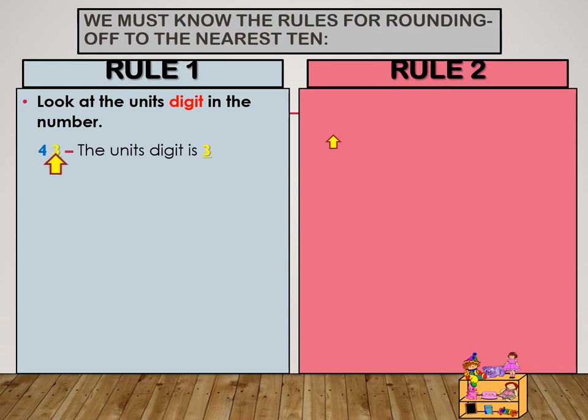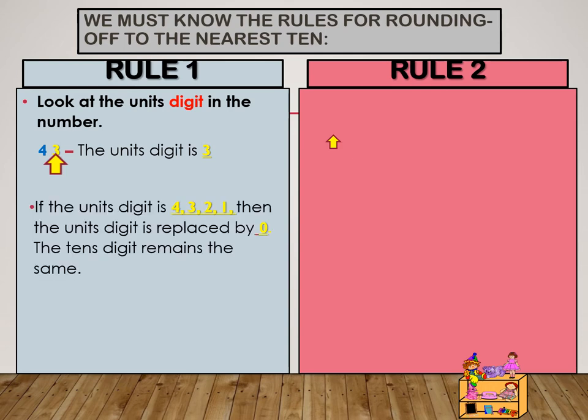If the unit's digit is 4, 3, 2, or 1, then the unit's digit is replaced by 0. The 10's digit remains the same. So 43 rounded off to the nearest 10 will be 40.